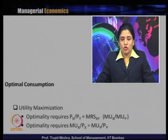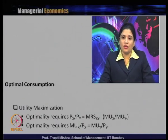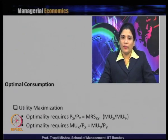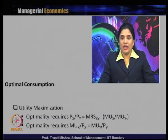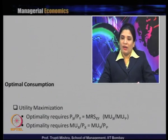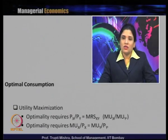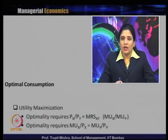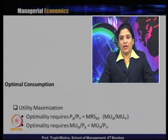Optimality requires equality between MUx/Px and MUy/Py. With two goods, fixed prices, and fixed income, the optimal consumption or consumer equilibrium point is where MUx/Px = MUy/Py. Looking at the graph, this is the point marked with the arrow — the equilibrium consumption bundle that is affordable and gives the highest level of satisfaction.